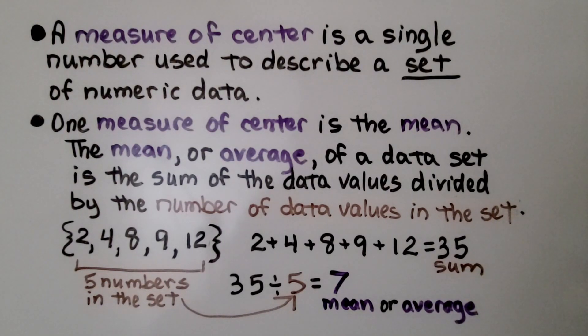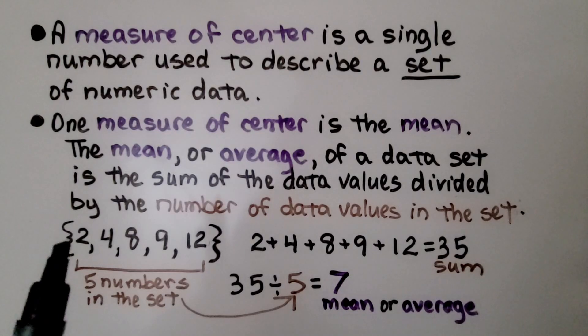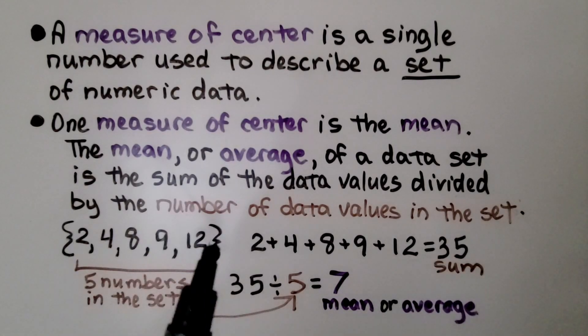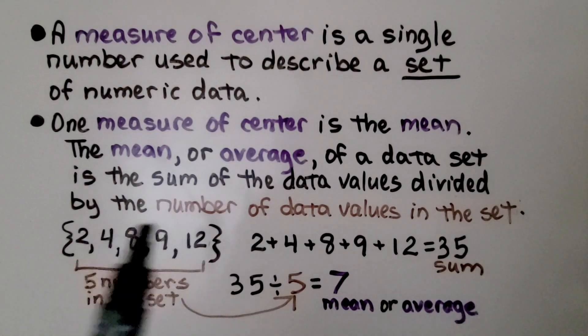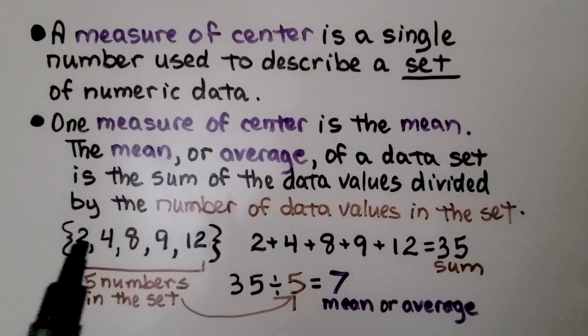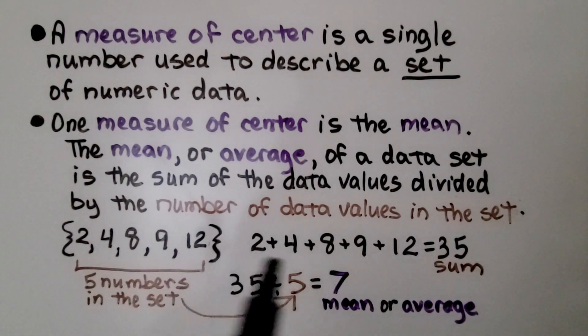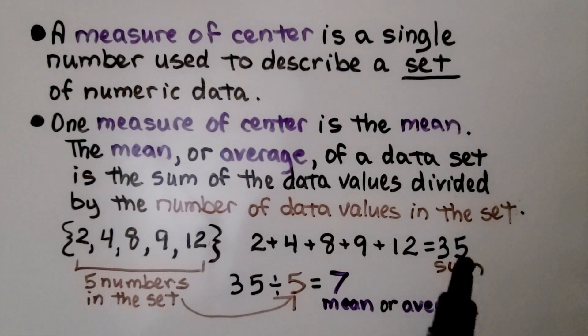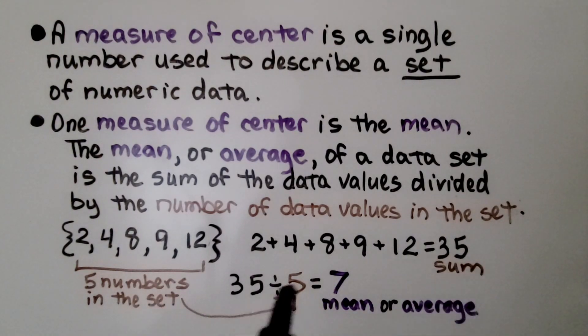Now if that sounds confusing, let's figure this out. We have one, two, three, four, five numbers in this set. We add the numbers as addends. We get a sum of 35. Then we divide it by that amount, five.